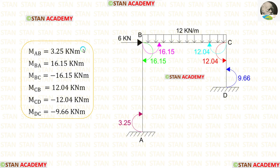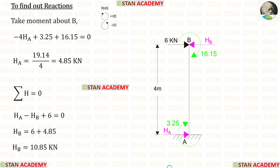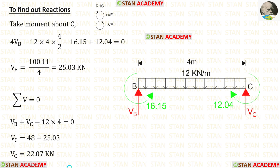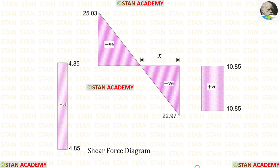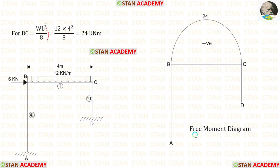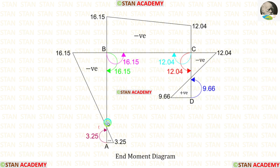We have now calculated all of the moments in this analysis. Next we find the reactions. Taking moments about B for column AB gives HA, and applying equilibrium gives HB. Taking moments about C for beam BC gives VB, and equilibrium gives VC. For column CD, taking moments about D gives HC, and equilibrium gives HD. Using these reactions and the applied loads, we can draw the shear force diagram. Using the appropriate formula, we can draw the free moment diagram. Using the direction of the moments, we can draw the end moment diagram.